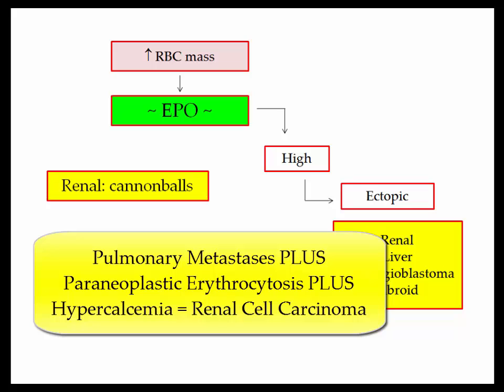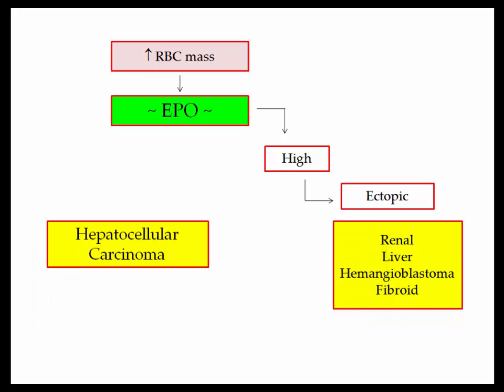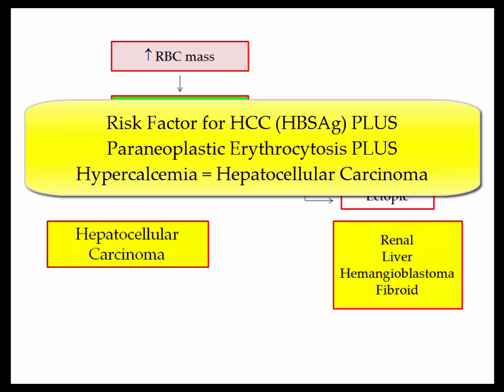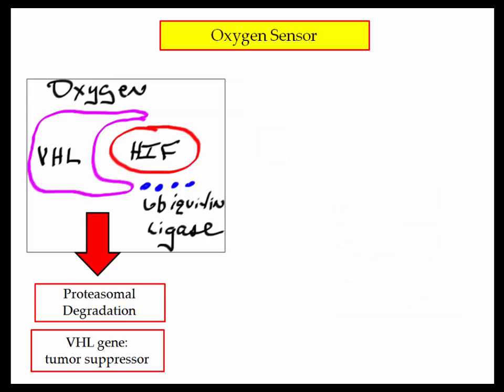Cannonballs are the classic description of metastatic lesions in the lung. If the NBME describes multiple nodules or lesions and presents a high hematocrit plus-minus high calcium, they are presenting a patient with renal cell carcinoma — they expect you to know that association. Hepatocellular carcinoma is pretty similar: the patient will have risk factors for liver cancer such as chronic hepatitis from viral infection, will be reported with a high hematocrit plus-minus high calcium. Hemangioblastoma will be presented in the context of von Hippel-Lindau syndrome, covered next.